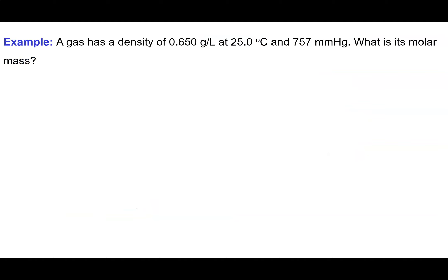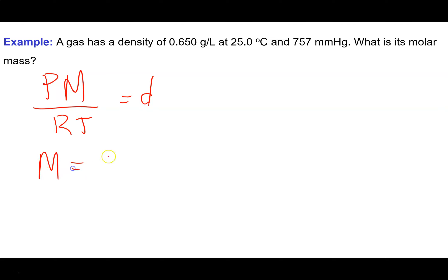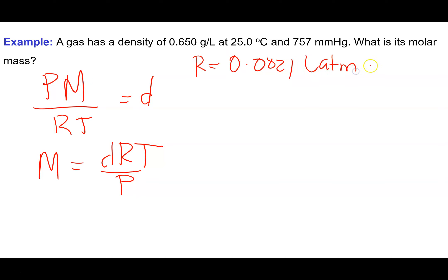In this problem, we're asked to calculate the molar mass of a gas given its density. A gas has a density of 0.650 grams per litre at 25 degrees Celsius and 757 millimetres of mercury. We know that density = PM/RT, and we want to solve for uppercase M, so molar mass equals density times R times T divided by P. R has units of 0.0821 litres·atm per mole per Kelvin, so pressure must be in atmospheres and temperature in Kelvin.